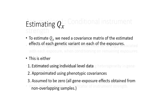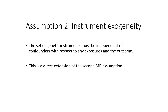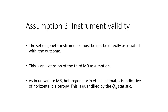In order to accurately estimate the QX statistic, we require a covariance matrix of the estimated effects of each genetic variant on each of the exposures. This can be acquired by either estimating the values using individual level data, approximating the values using phenotypic covariances, or assuming this covariance matrix to be zero — which would be the case where all gene-exposure effects were estimated using separate non-overlapping samples. The second multivariable MR assumption requires the set of genetic instruments to be independent of confounders with respect to any exposures and the outcome, requiring genetic variants to only be associated with their exposure of interest. Finally, genetic variants are required to not be directly associated with the outcome of interest — a direct extension of the third MR assumption — where direct associations between a gene and an outcome are defined as horizontal pleiotropic effects.